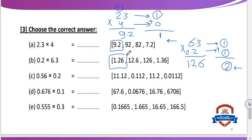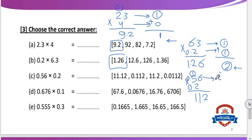Letter C: 0.56 multiply 0.2. Ignore the decimal point — 56 multiply 2. 2×6=12 — put 2 carry 1; 2×5=10 plus 1=11. Result is 112. In 0.56, decimal point is after 2 digits; in 0.2, after 1 digit. 2 plus 1 equals 3. Put decimal point after 3 digits from the right to the left — and add a leading zero. So the result will be 0.112.